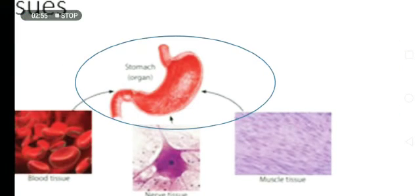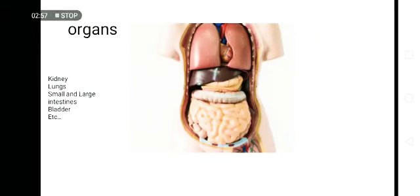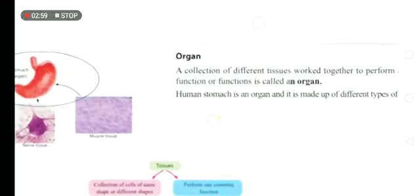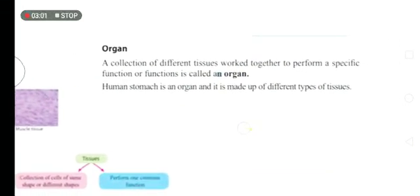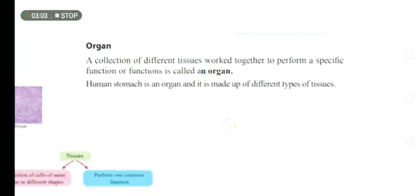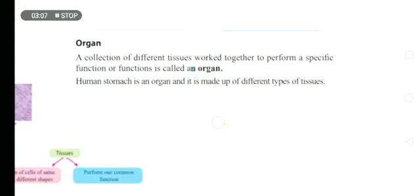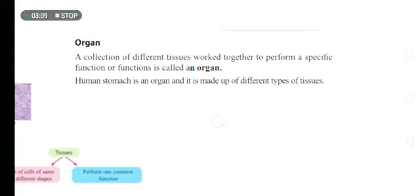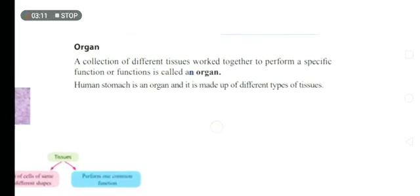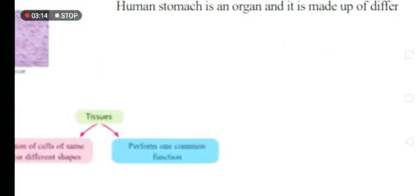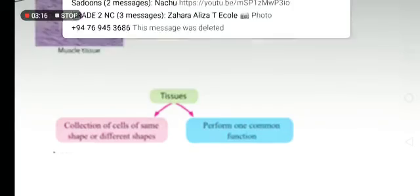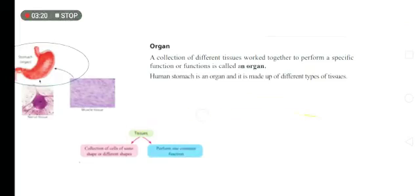Organ: a collection of different tissues work together to perform a specific function or functions is called an organ. Human stomach is an organ and is made up of different types of tissues.